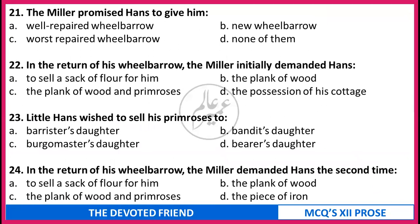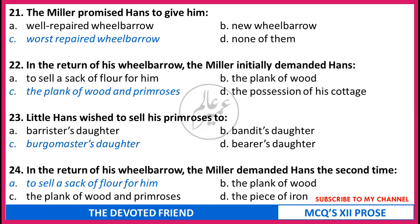The Miller promised Hans (a) to give him a well-repaired wheelbarrow, (b) new wheelbarrow, (c) worst-repaired wheelbarrow, (d) none of them. In return for his wheelbarrow, the Miller initially demanded Hans (a) to sell a sack of flour for him, (b) the plank of wood, (c) the plank of wood and primroses, (d) the possession of his cottage. Little Hans wished to sell his primroses to (a) barrister's daughter, (b) bandit's daughter, (c) burgomaster's daughter, (d) bearer's daughter. In return for his wheelbarrow, the Miller demanded Hans the second time (a) to sell a sack of flour for him, (b) the plank of wood, (c) the plank of wood and primroses, (d) the piece of iron. Correct answers: 21 - worst-repaired wheelbarrow. 22 - the plank of wood and primroses. 23 - burgomaster's daughter. 24 - had to sell a sack of flour for him.